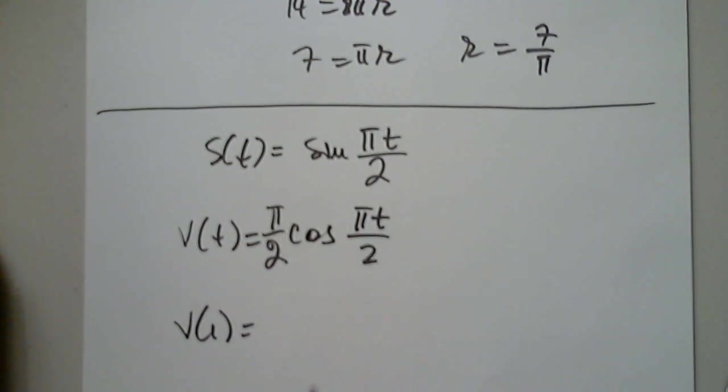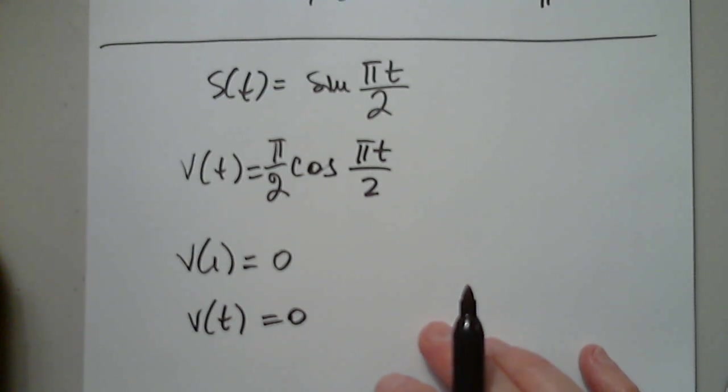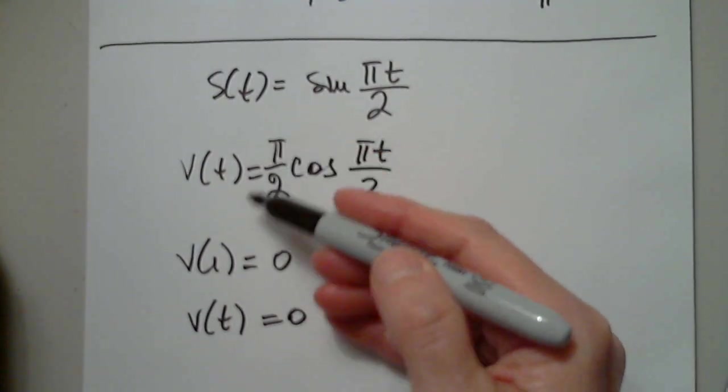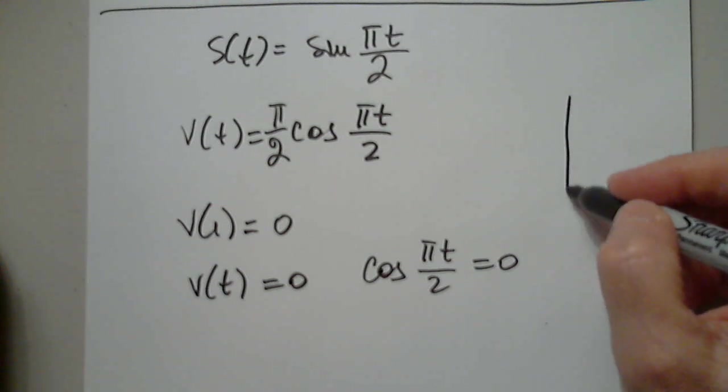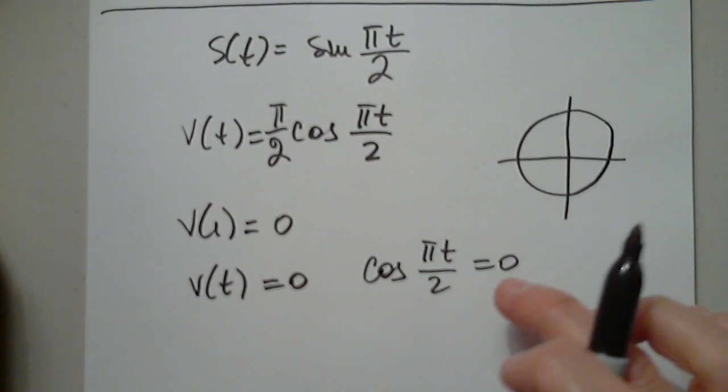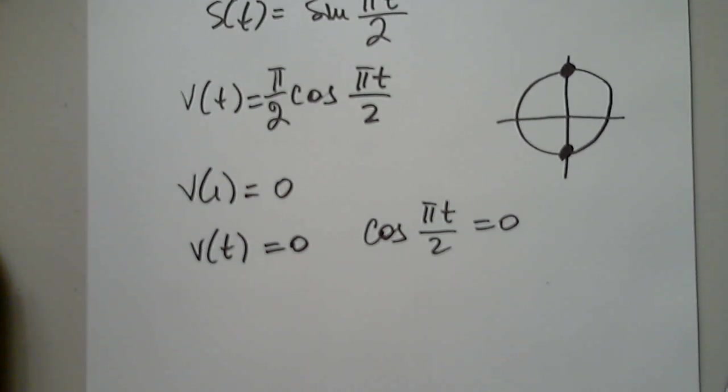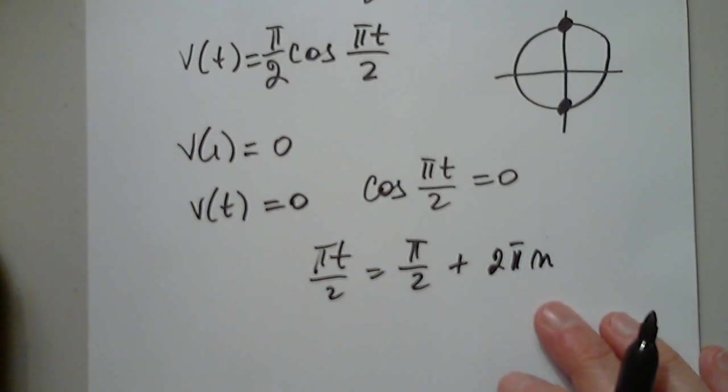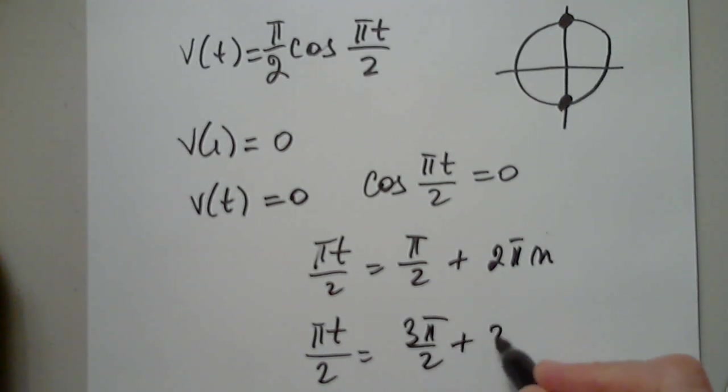Yes, because cosine pi over 2 is zero. Where I'm struggling is when is the particle at rest? Use the parameter n as needed to represent any integer. So when we set this equal to zero, this constant goes away. So cosine pi t over 2 is set equal to zero. When we look at the unit circle, cosine is zero here and here. So pi t over 2 equals pi over 2 plus 2 pi n, and pi t over 2 equals 3 pi over 2 plus 2 pi n.